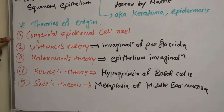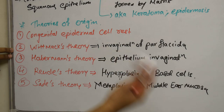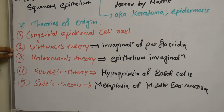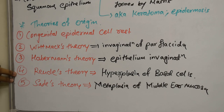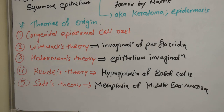To recap the five theories: congenital epidermal cell rests; Wittmaack theory — invagination of pars flaccida; Habermann's theory — epithelium invagination; Ruedi's theory — hyperplasia of basal cells; and Sade's theory — metaplasia of middle ear mucosa.